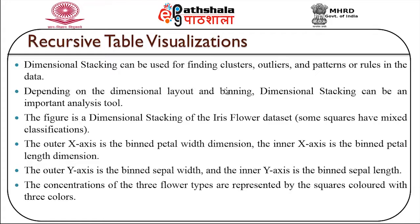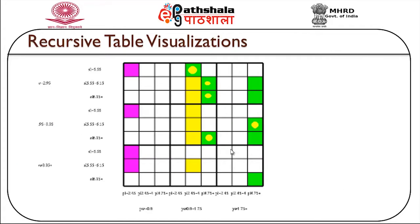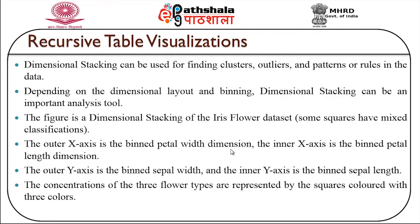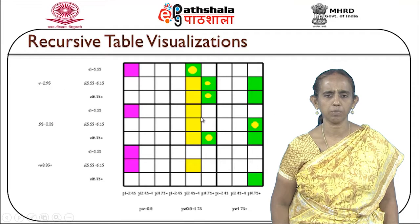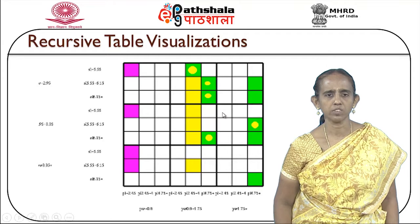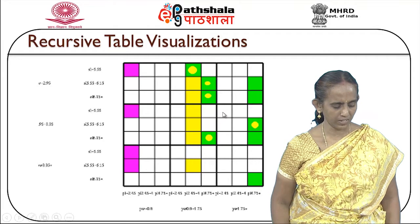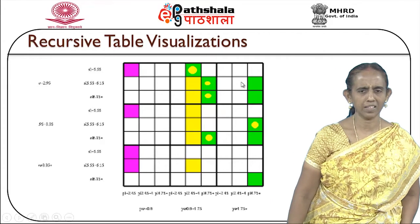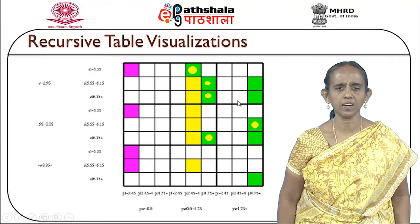An example shows a dimensional stacking of the iris flower dataset, where some squares have mixed classification. The outer x-axis is a binned petal width dimension, the inner x-axis is a binned petal length dimension, the outer y-axis is a binned sepal width, and the inner y-axis is a binned sepal length. The concentration of the three flower types is represented by squares colored in three different colors — pink, yellow and green.